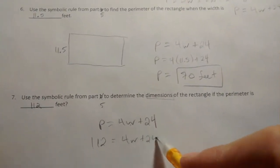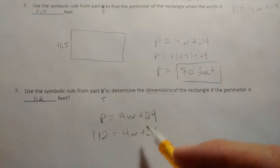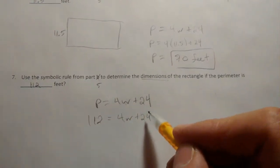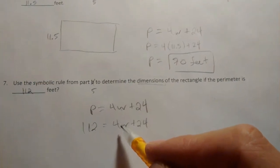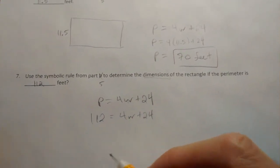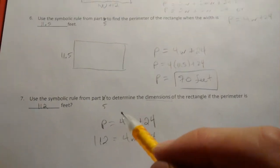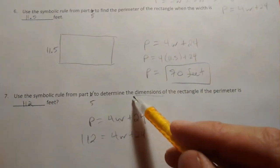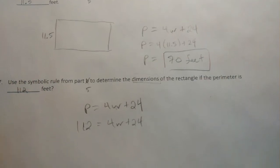We're backtracking to find what the width would be for a perimeter of 112. Hopefully you're thinking subtract 24 and divide by 4. Finish that and see what you get for W, then take your W value and find the length, and write your dimensions. Catch up with me in the next video.